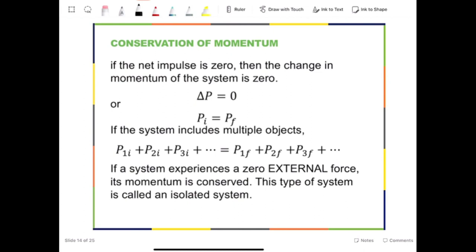There is a special scenario. If the net impulse is zero, then the change in momentum will be zero, or the momentum will be a constant.